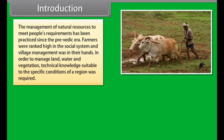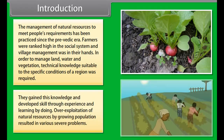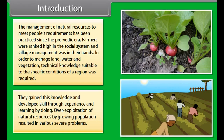The management of natural resources to meet people's requirements has been practiced since the pre-Vedic era. Farmers were ranked high in the social system and village management was in their hands. In order to manage land, water and vegetation, technical knowledge suitable to the specific conditions of a region was required. They gained this knowledge and developed skill through experience and learning by doing.